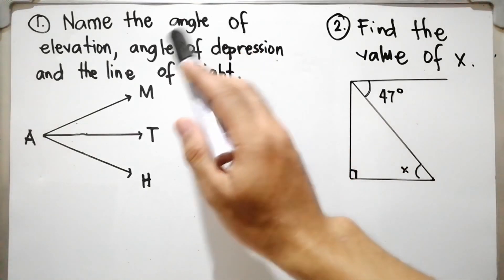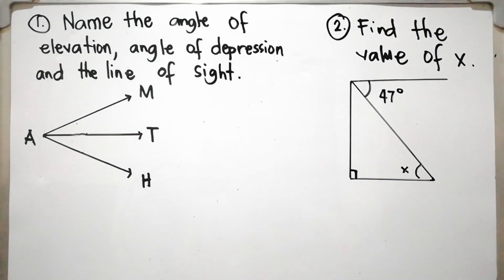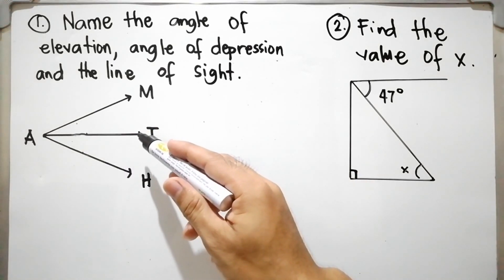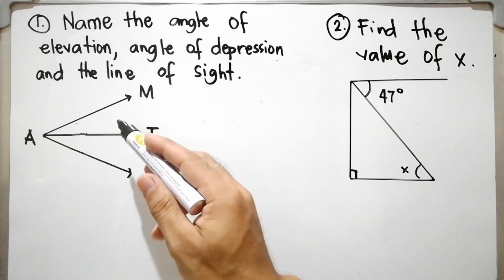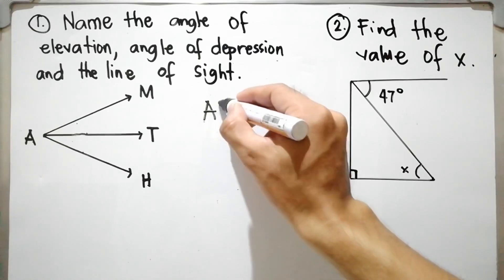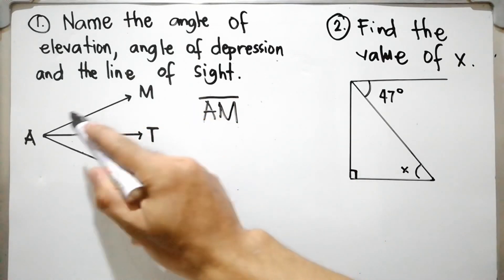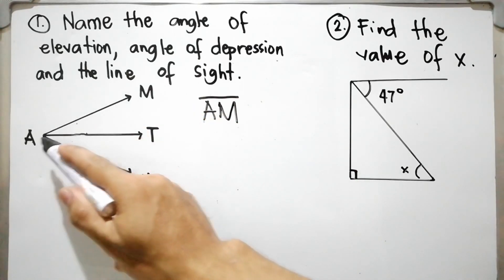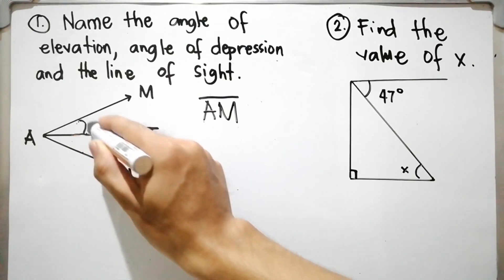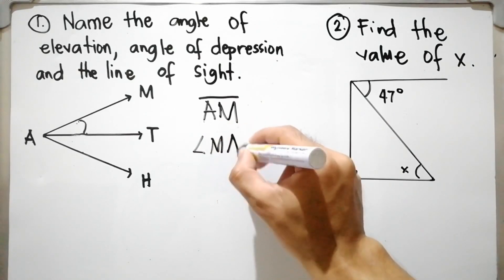Let us name the angle of elevation and angle of depression in the figure. The angle of elevation is the angle formed between the horizontal line — which is line AT — and the line of sight above, which is line segment AM. So the angle formed between AM and the horizontal line AT is the angle of elevation, which is angle MAT.